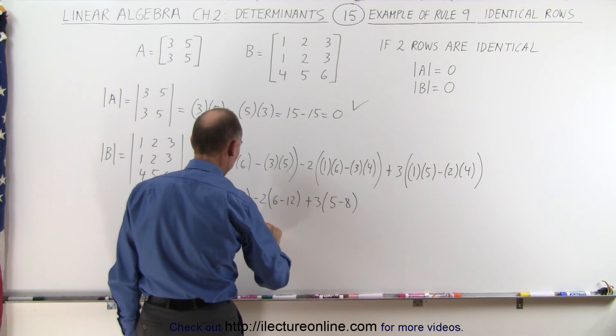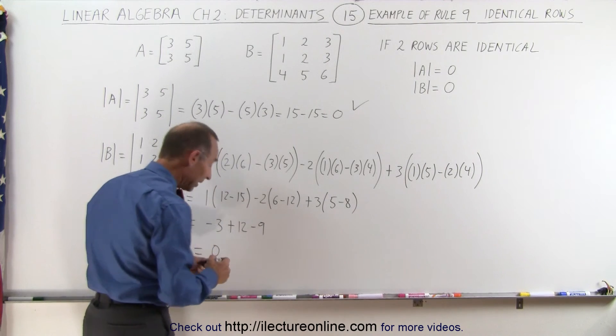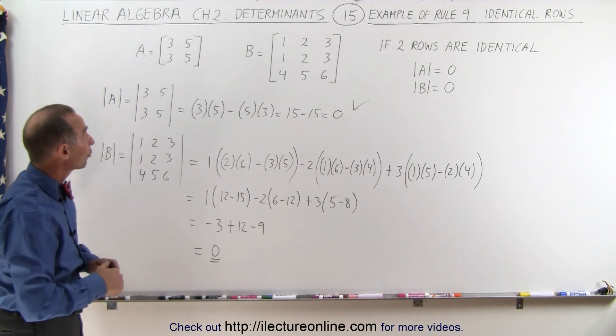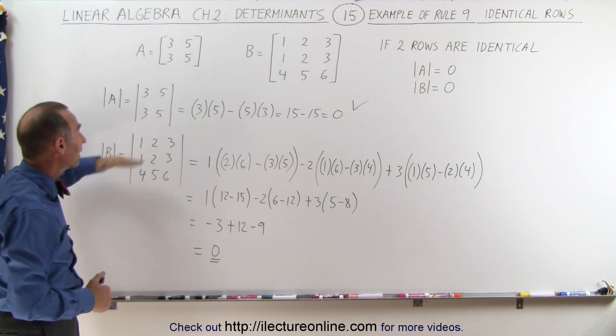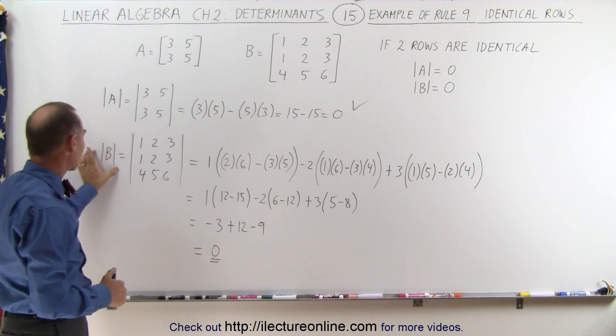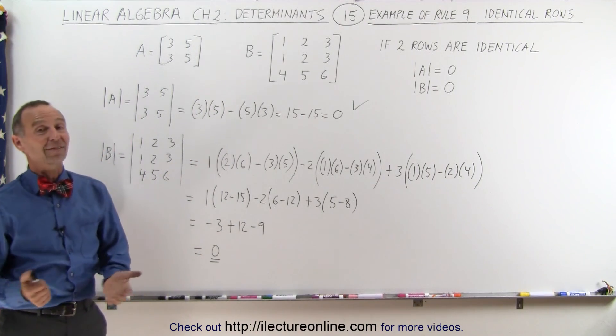And you can see that this indeed does equal zero. So in the case of a 3 by 3 matrix as well, you can see the rule holds that if two of the rows are identical, the determinant of that matrix will indeed equal zero. And that's how it's done.